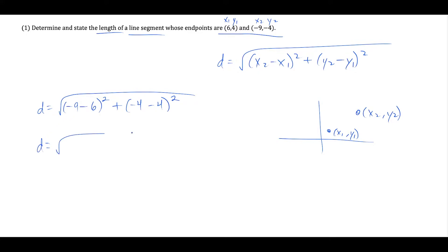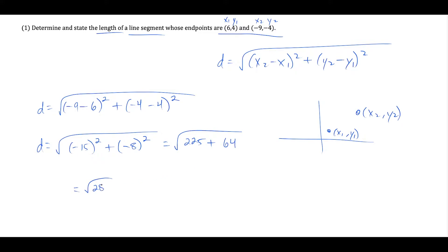Negative 9 minus 6 is negative 15, and that's being squared, plus negative 4 minus 4 is negative 8, and that's being squared. So we work this out: negative 15 squared is 225, plus negative 8 squared is 64, and this gives us the square root of 289, which is 17. So the length of the line segment is going to be 17 units.